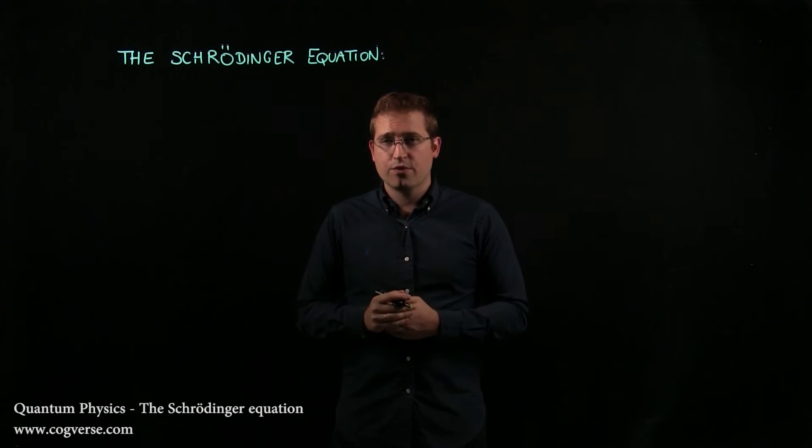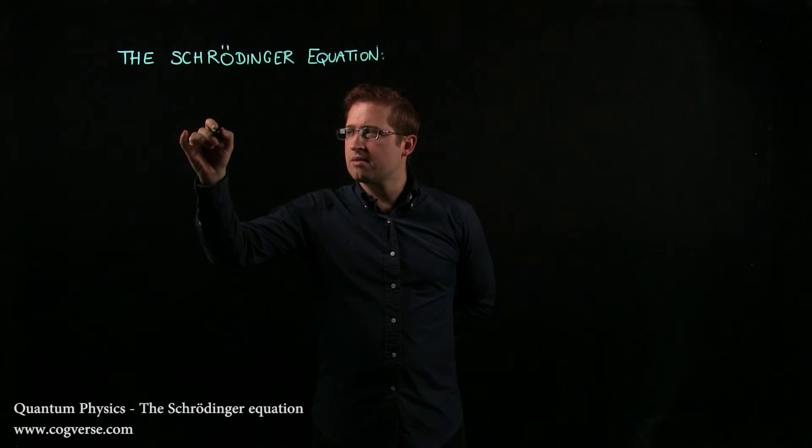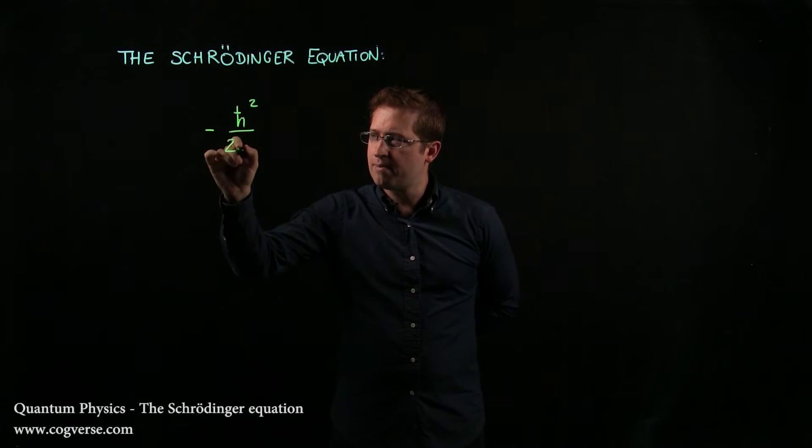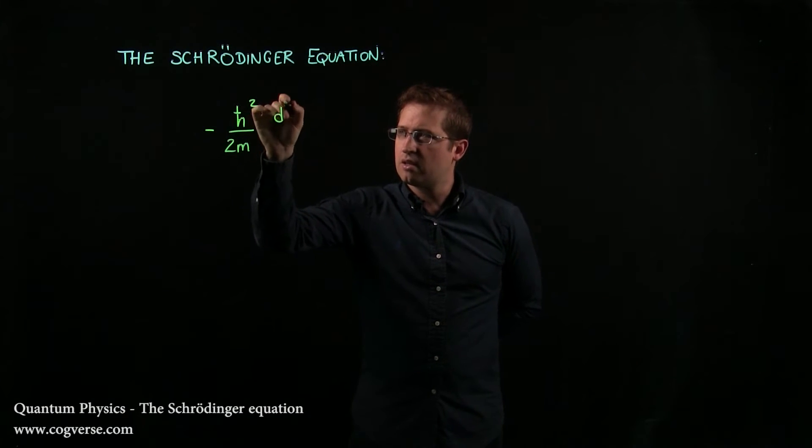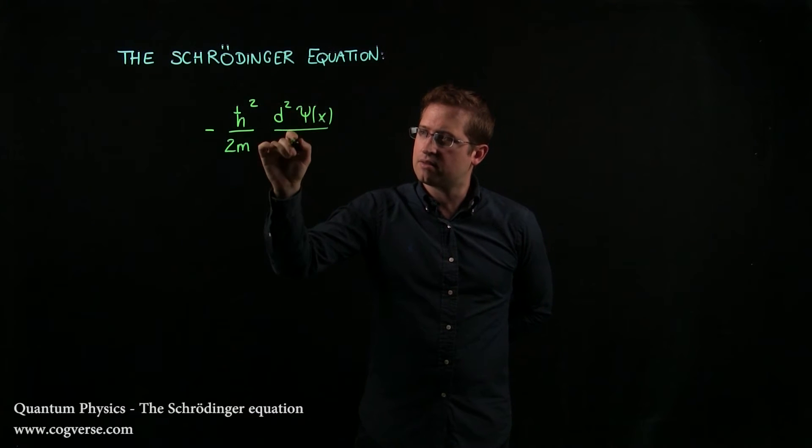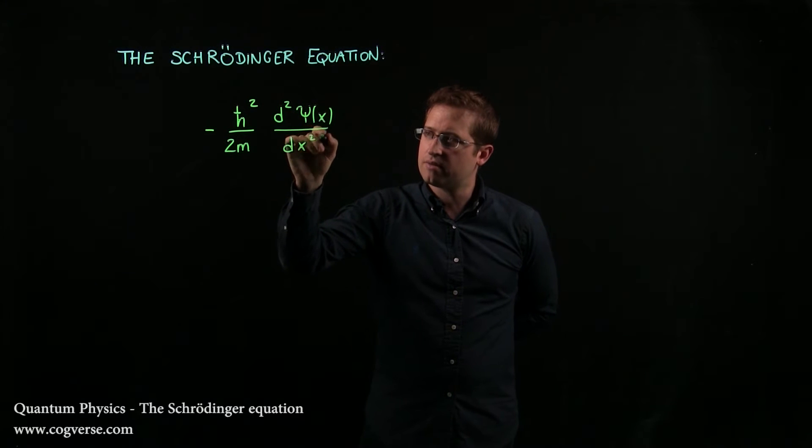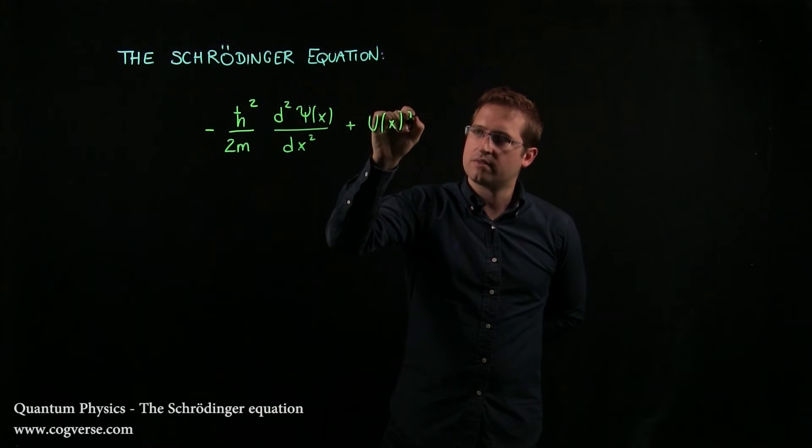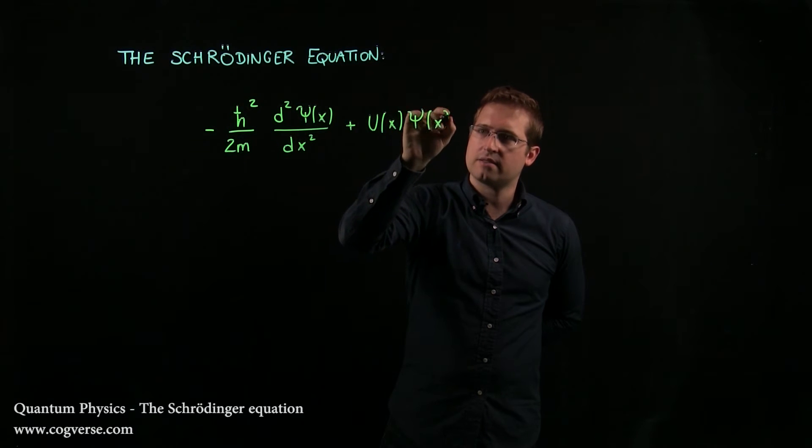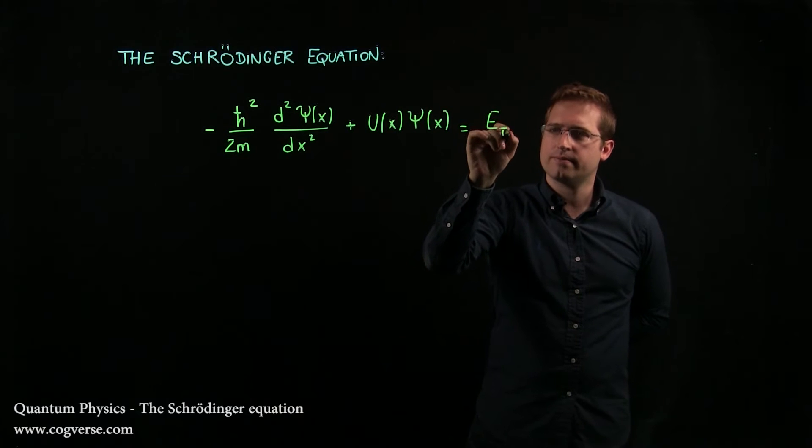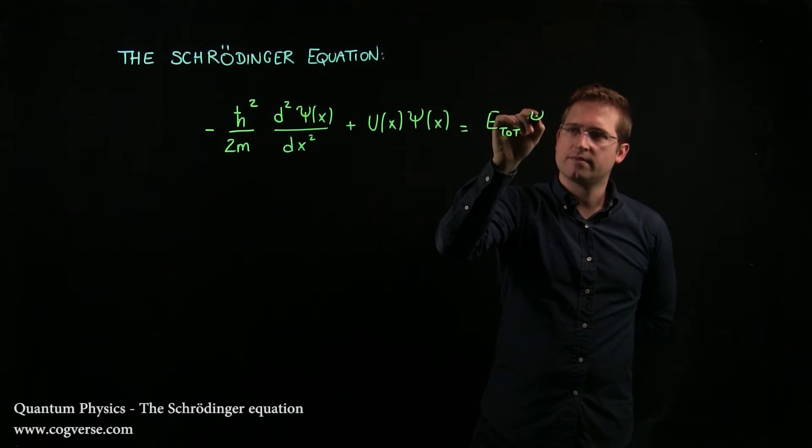In that case, the Schrödinger equation is minus h-bar squared over 2m d² ψ(x) over dx² plus U of x ψ(x) is equal to E_total ψ(x).